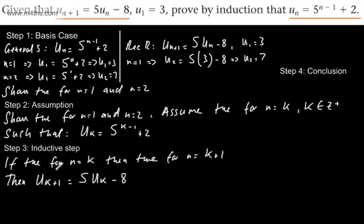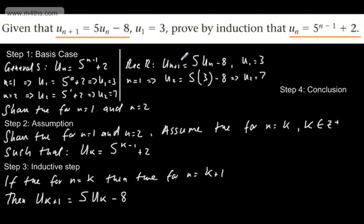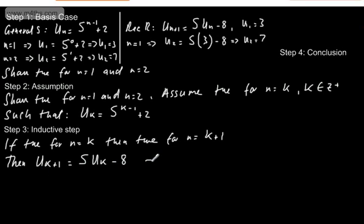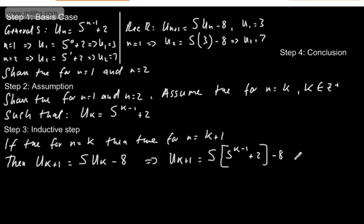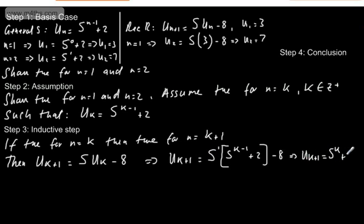What we want to show is that this turns out to be the general statement when n equals k plus 1. We write u_{k+1} equals 5 lots of u_k, and since u_k is 5 to the power of k minus 1 plus 2, we substitute that in. So we have 5 multiplied by 5 to the power of k minus 1 plus 2, then minus 8. Using rules of indices, that's 5 to the first times 5 to the power of k minus 1, giving 5 to the power of k, plus 10 minus 8.